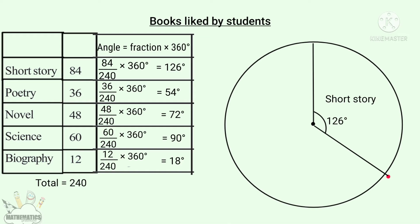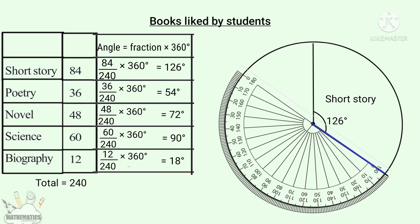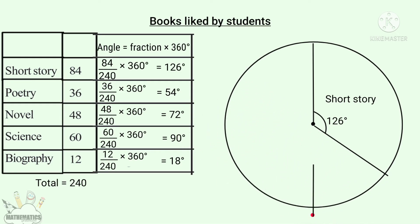Now we have the Poetry segment. The Poetry angle is 54 degrees. We place the protractor at the center and measure the 54-degree angle from the previous line. This segment is Poetry.